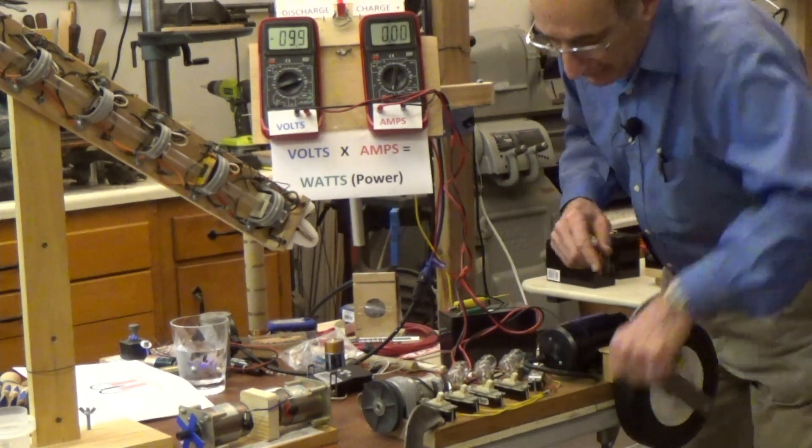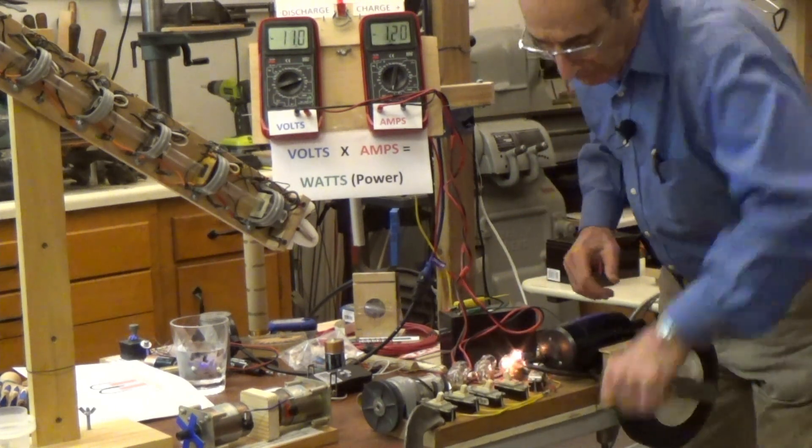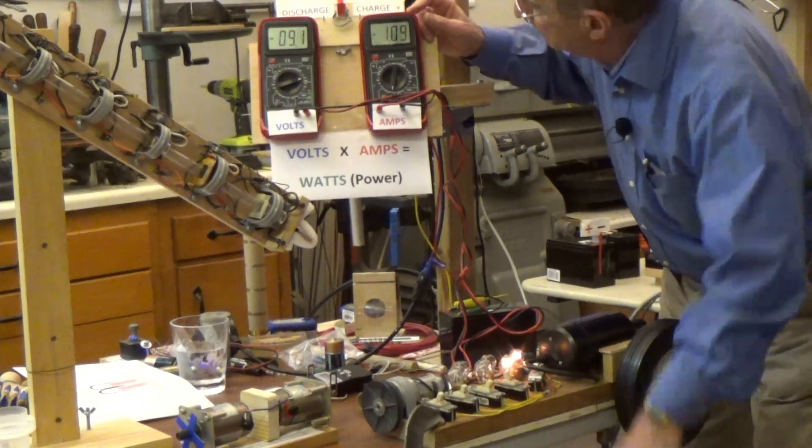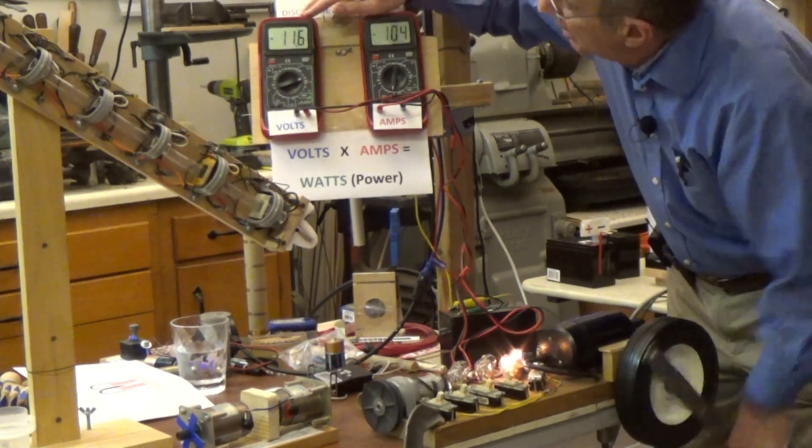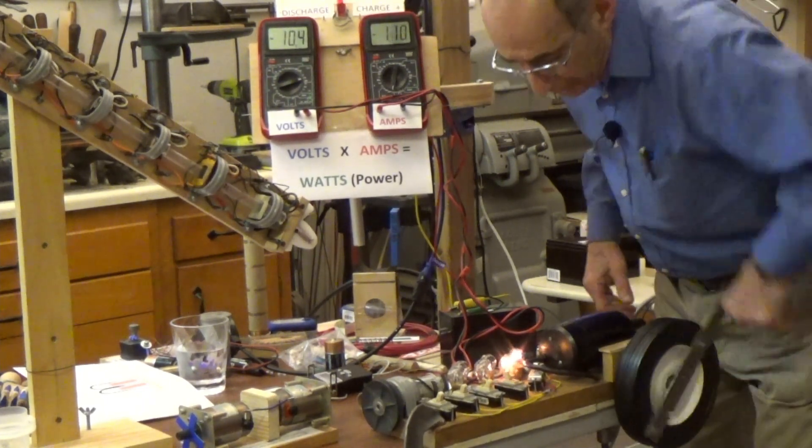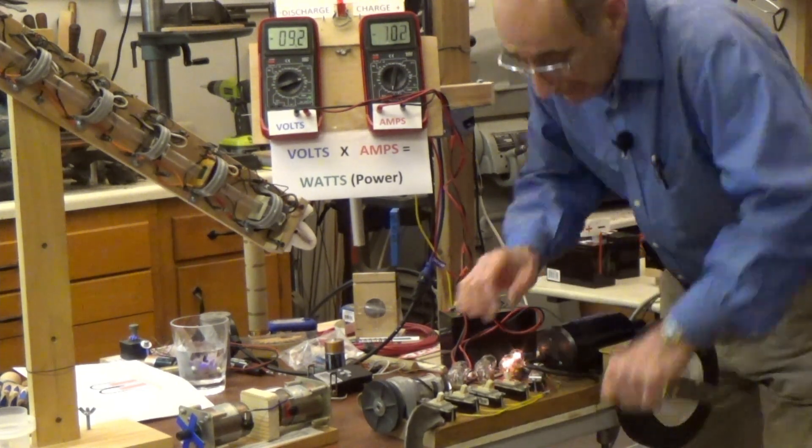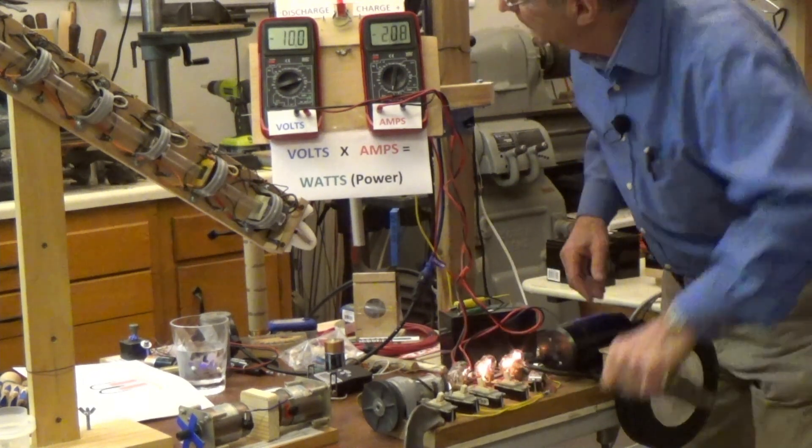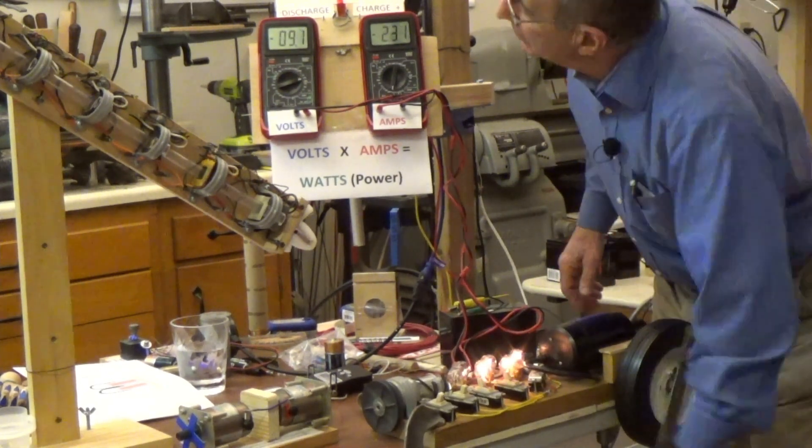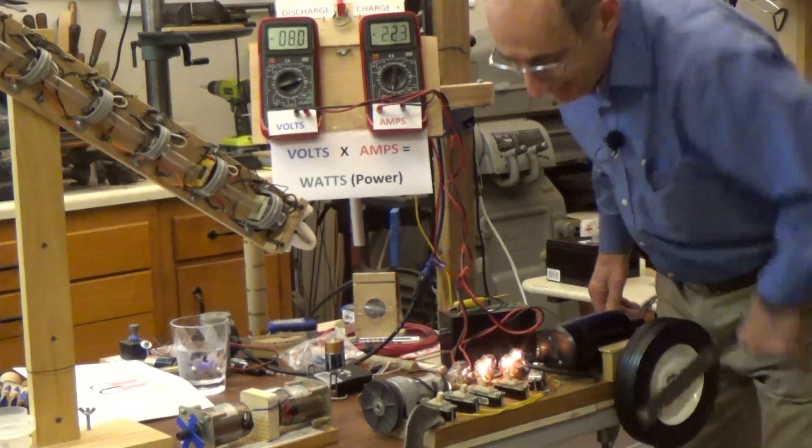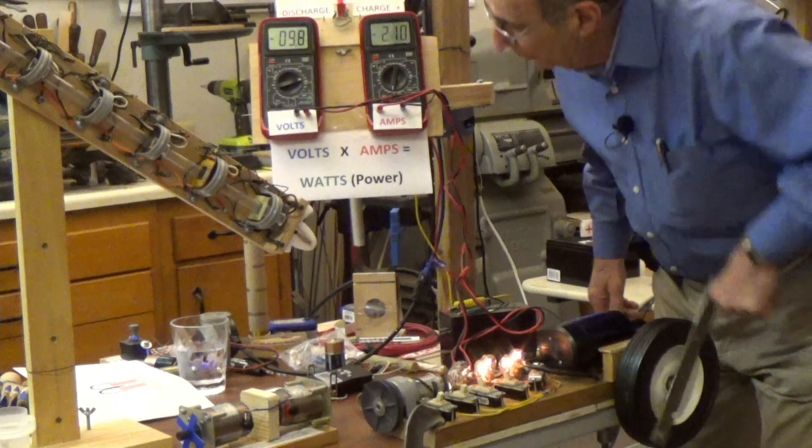Now, I'm going to turn this bank of lights on. So, I'm flowing an amp. Times 10 volts is 10 watts. It's harder to turn. I'm having to work now. Turn on the second bank, 2 amps, times 10 volts. That's 20 watts.